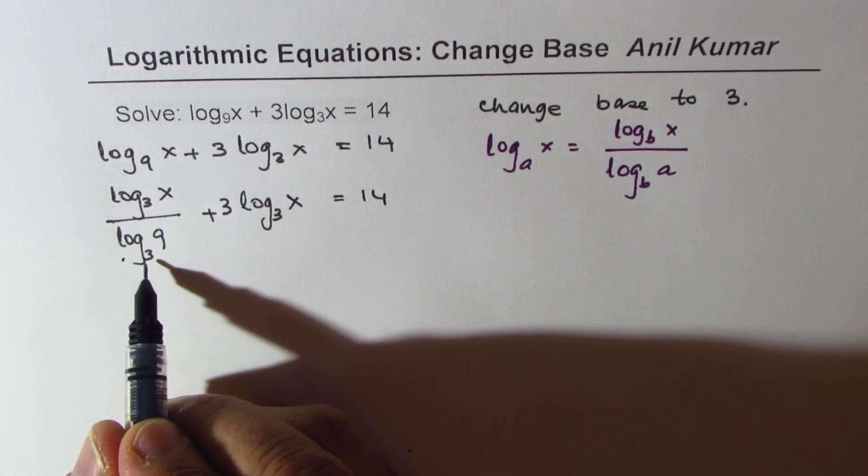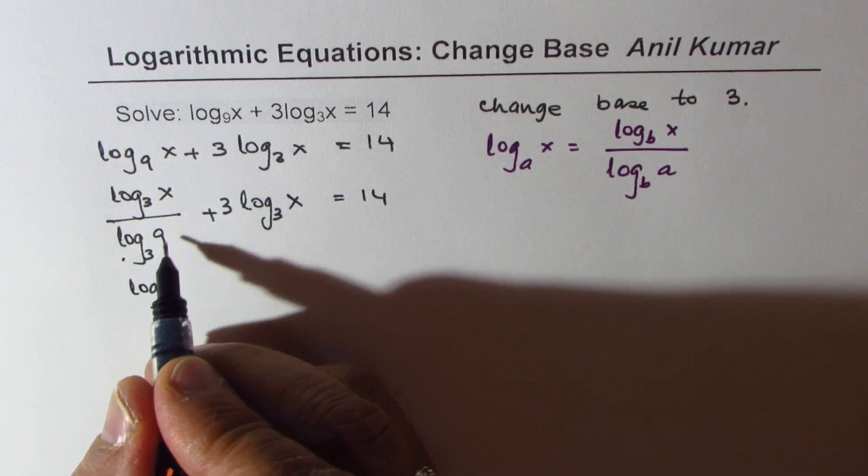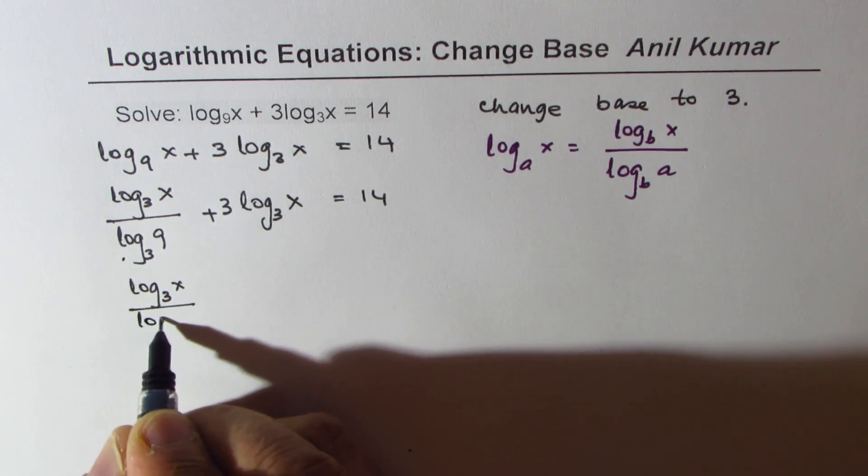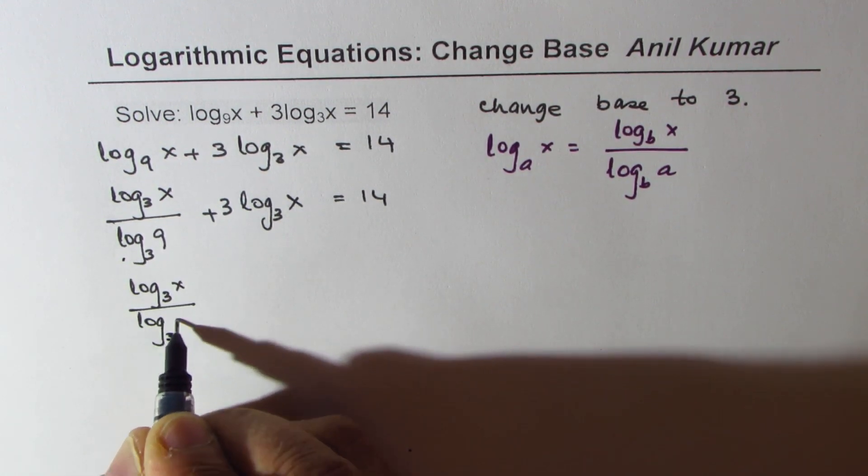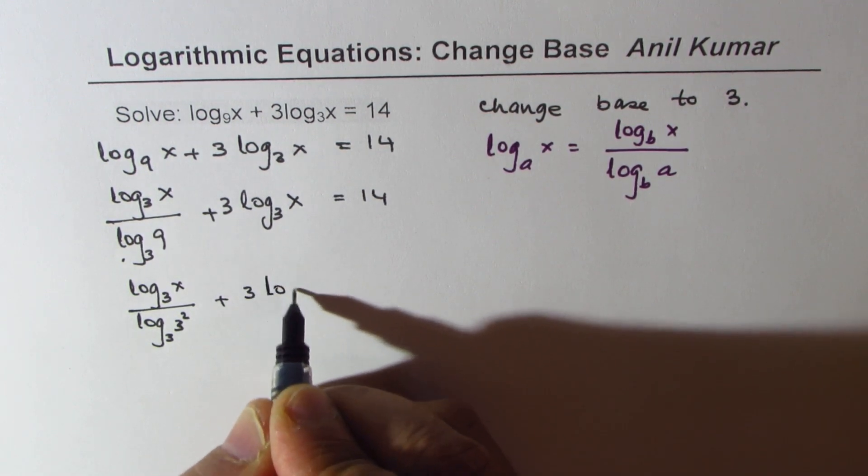What is log base 3 of 9? It is 3 squared, that is 2. Let's rewrite this as log base 3 of 3 squared, which is 9, plus 3 times log base 3 of x equals 14.